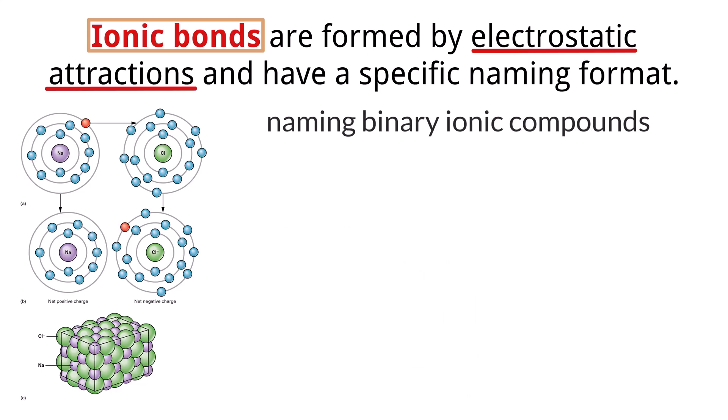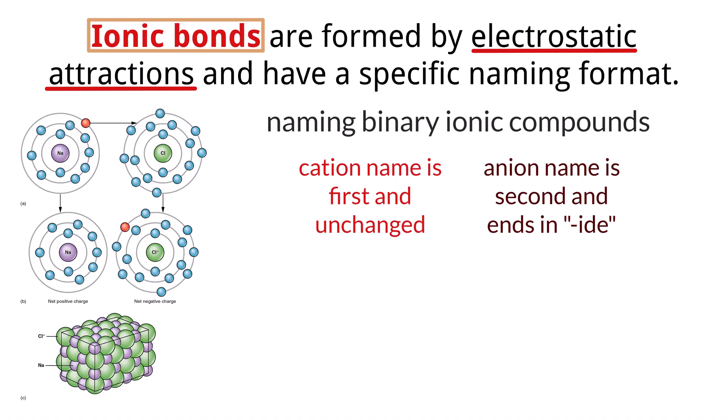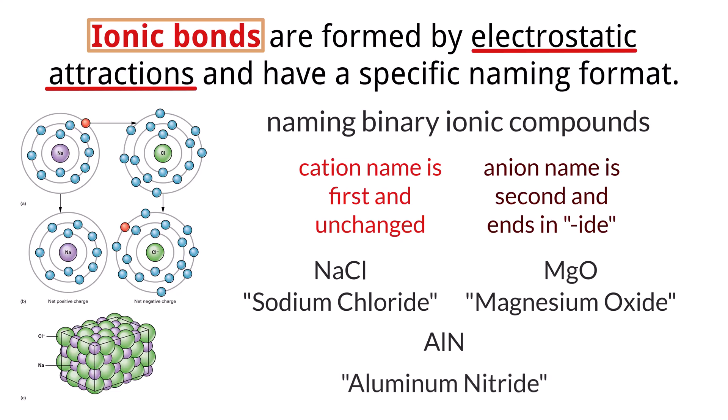Naming binary ionic compounds, which consist of only two elements, follows a straightforward rule. The name of the cation, usually the metal, comes first, followed by the name of the anion, usually the nonmetal. The anion's name is modified by dropping its usual ending and adding the suffix ide. As an example, the compound formed from sodium and chlorine is named sodium chloride. Similarly, magnesium and oxygen form magnesium oxide, and aluminum and nitrogen form aluminum nitride.